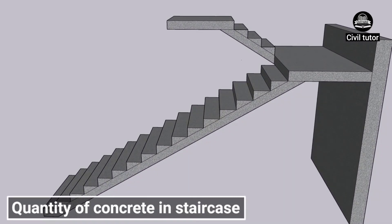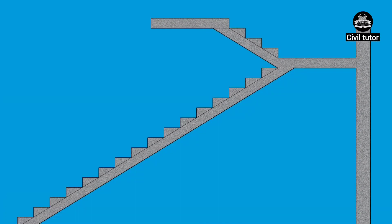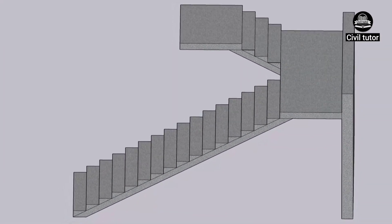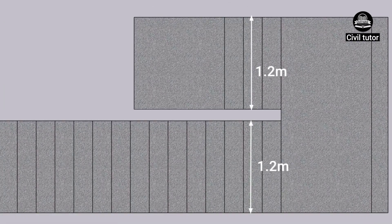Suppose we need to calculate the quantity of concrete required for a staircase with the given dimensions. The total height of this staircase is 3 meter. Height of first flight is 2.4 meter. The size of riser is 0.15 meter. Size of tread is 0.25 meter. Thickness of landing is 0.15 meter. The height of second flight is 0.45 meter from landing up to the bottom of floor slab. The thickness of waist slab is given as 150 mm or 0.15 meter. Width of each flight is 1.2 meter. The spacing between two flights is 0.15 meter and the width of landing is taken as 1.2 meter.